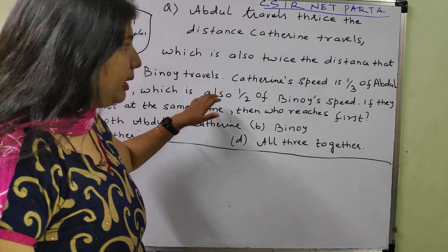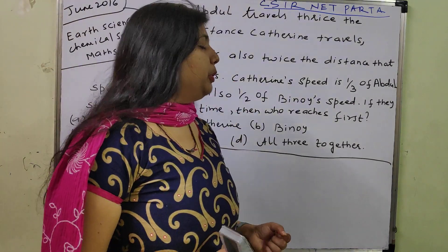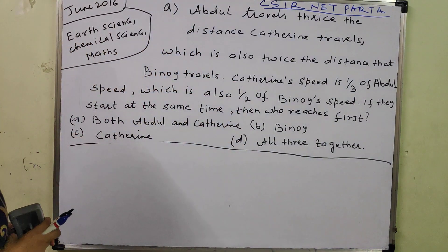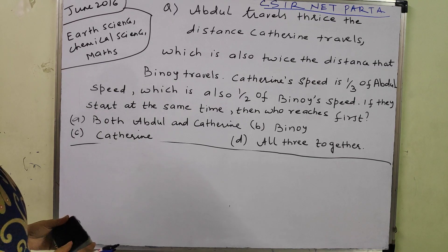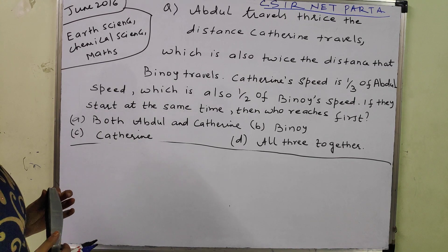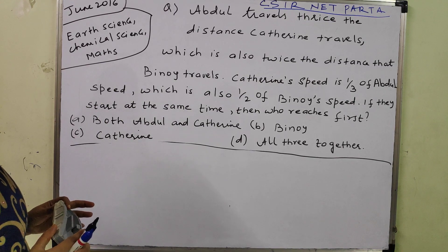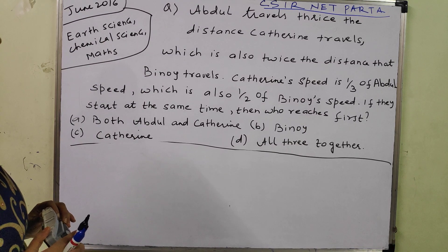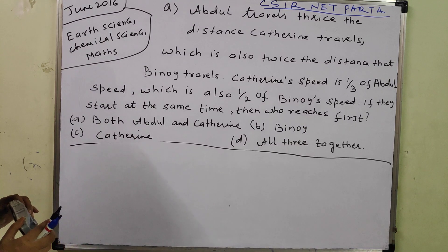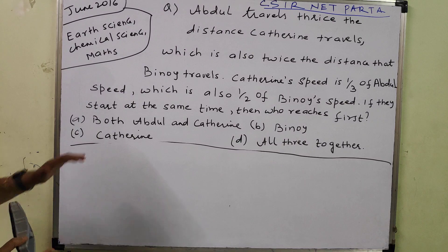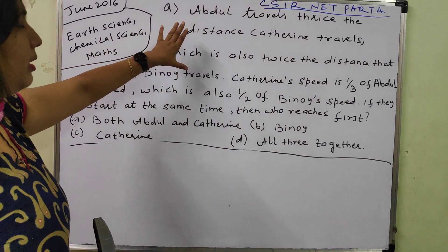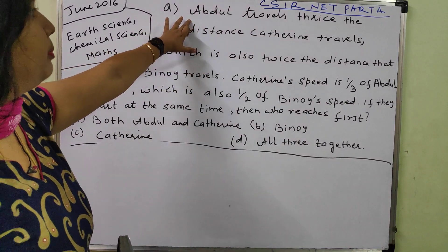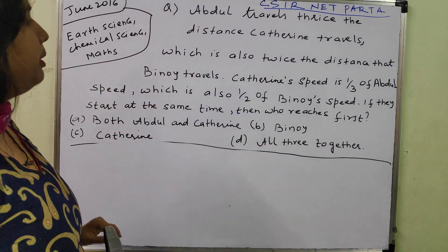The question is looking very big but it's going to take very less time. Let's read the question: Abdul travels thrice the distance Catherine travels, which is also twice the distance that Benoit travels. So this part is about how much distance is travelled by Abdul, Catherine and Benoit.